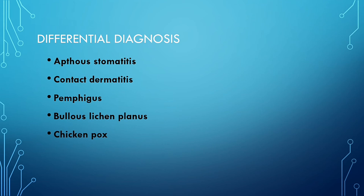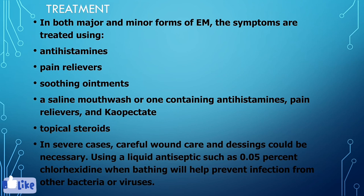Differential diagnosis includes aphthous stomatitis — a skin lesion occurring mostly in the mouth, lips, and gingiva that resembles erythema multiforme — as well as contact dermatitis, lichen planus, chickenpox, and pemphigus bullous. These lesions can match with erythema multiforme.